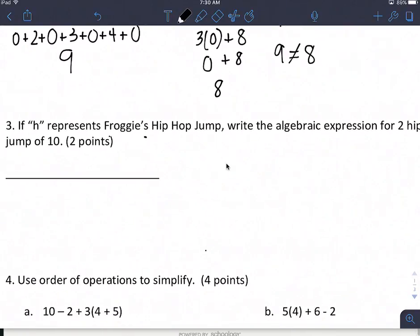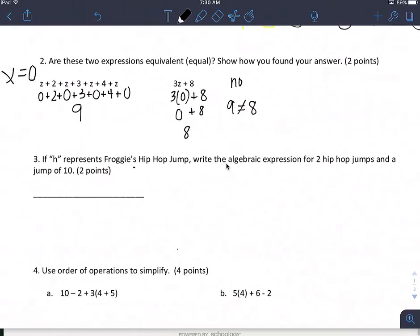All right. If H represents Froggy's hip-hop jump, write the algebraic expression for 2 hip-hop jumps and a jump of 10. Well, we have 2 H's because we have 2 hip-hop jumps. So H plus H and then a jump of 10. So I have H plus H plus 10 or 2H plus 10.